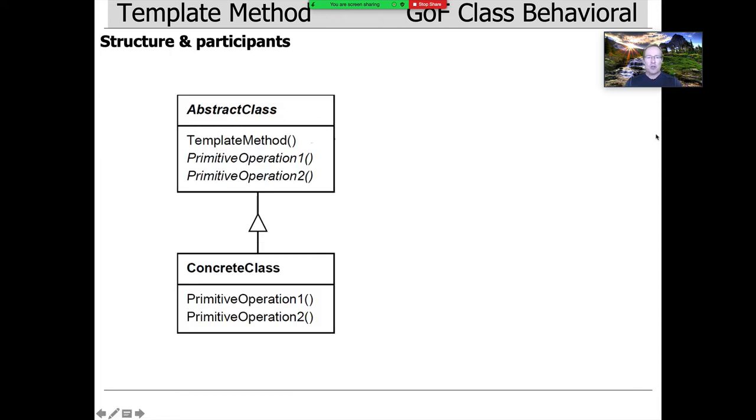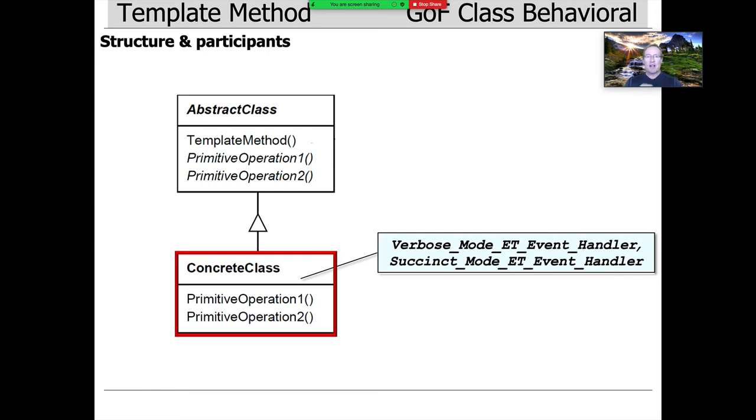The actual structure and participants of this pattern are also extremely easy. We have an abstract class, which could be something like our ET event handler, and it defines a template method and a bunch of primitive operations, or what I like to call hook methods. Then we have a concrete class, which can selectively override one or more of the hook methods or the primitive operations.